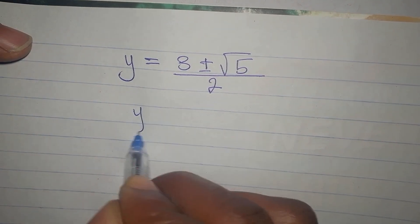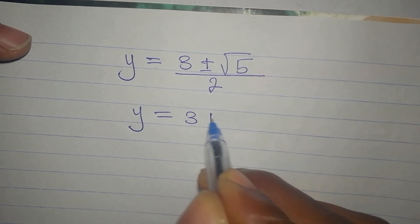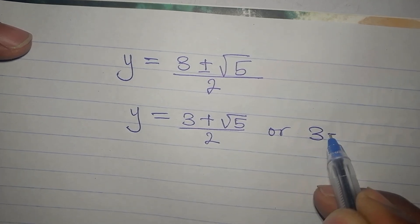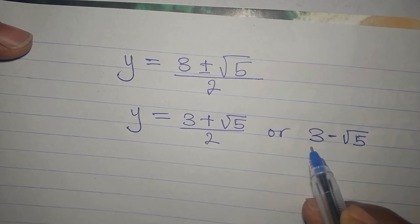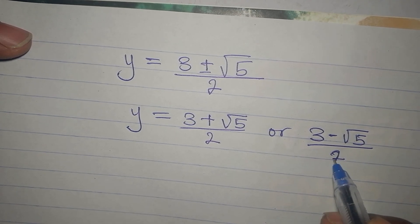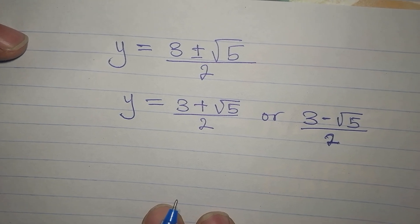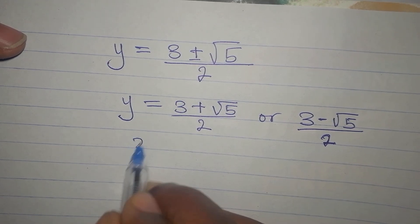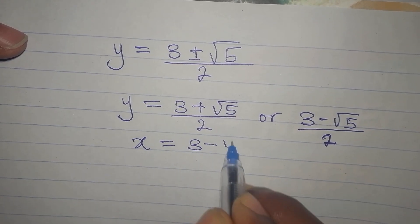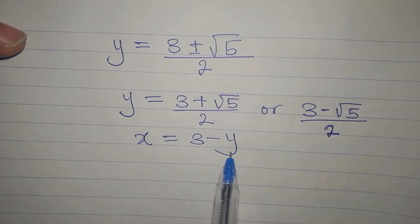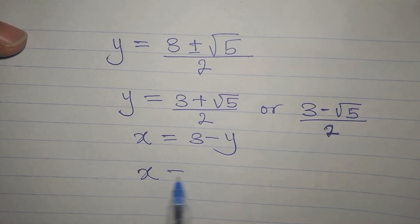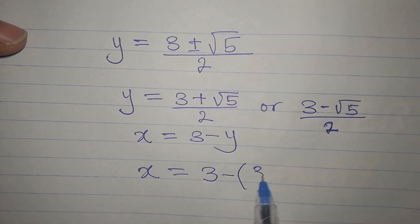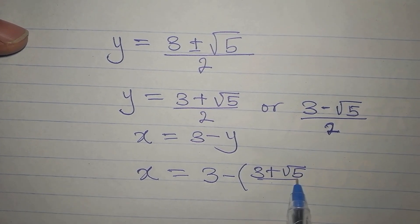This means that y is equal to 3 plus square root of 5 divided by 2. So from here now, we go back to our equation 3. Remember, our equation 3 is x equals 3 minus y. Now we know the value of y. So we're going to have x to be 3 minus open brackets. Y is 3 plus root 5 divided by 2.